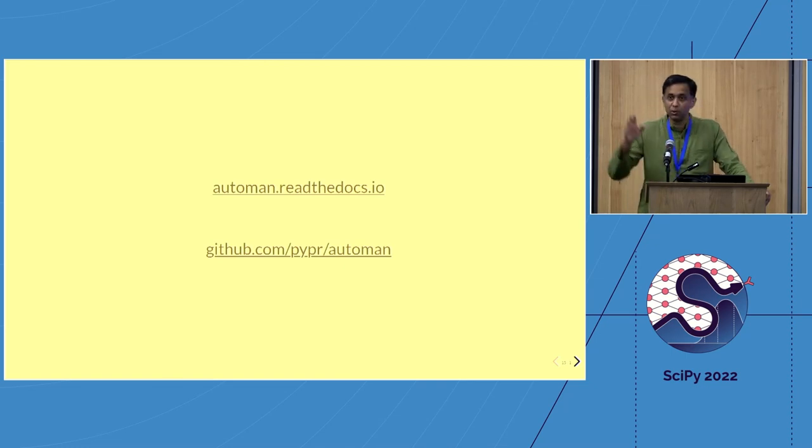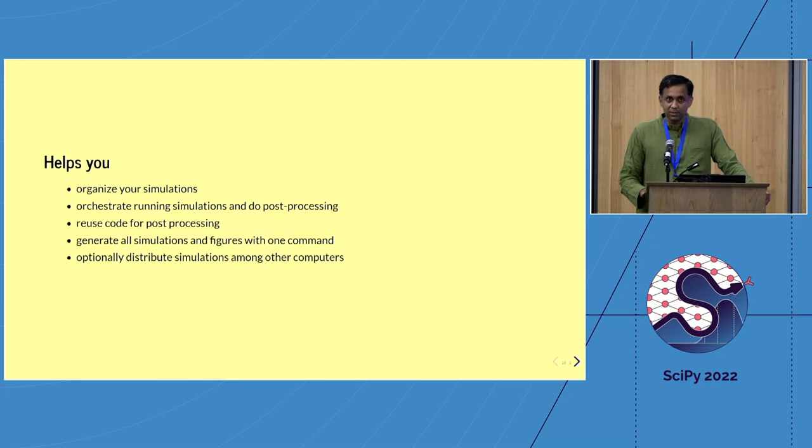So as part of this, I built this tool called AutoMan. The name comes from an old serial. It's a very forgettable serial, but the name is AutoMan. It's open source. And what does it do? It helps you organize your simulations. It helps you orchestrate running simulations and do post-processing. It helps you reuse code for post-processing. And it really helps you generate all your simulations and figures with one command. And icing on top of this is the fact that if you have additional computational resources, you can distribute your jobs pretty seamlessly to other computers.